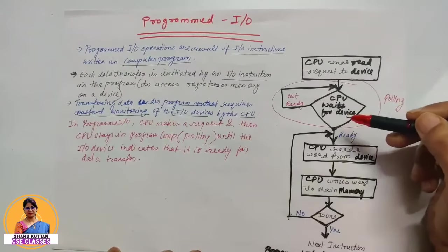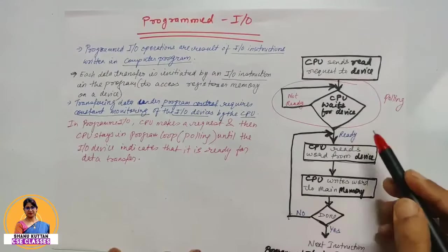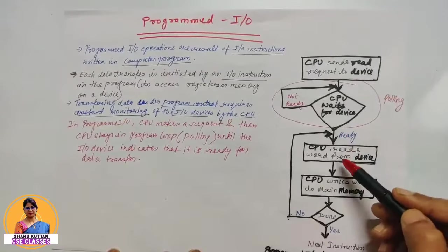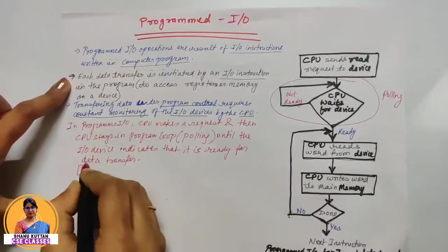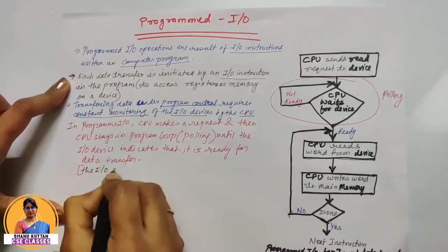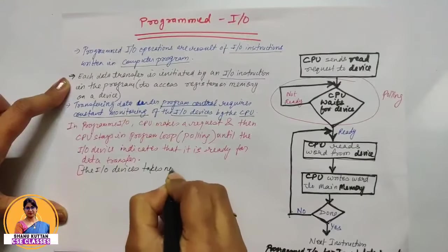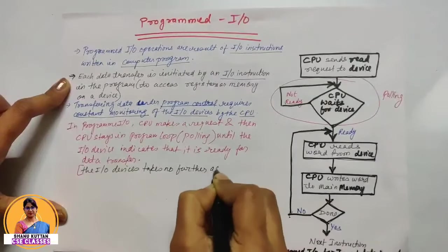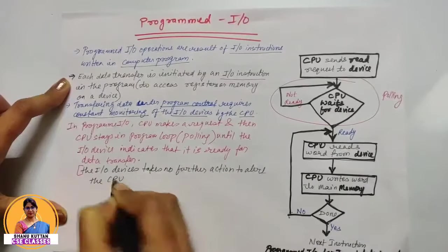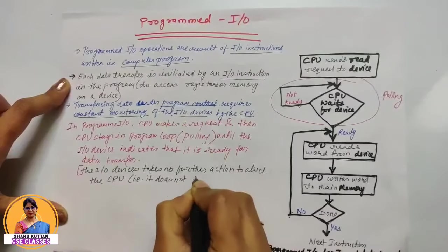CPU ko khud self testing karni hai, self checking karni hai interface ke status register ki ki kab status register ki through indication mile ki woh ready ho gaya hai aur woh uske saath data transfer kar sake. So we can say yaha pe the I/O device takes no further action to alert the CPU. So CPU ko alert karne ke liye koi bhi further action nahi le raha, means it does not interrupt the CPU.